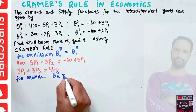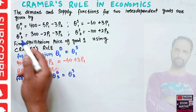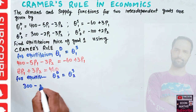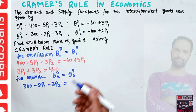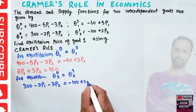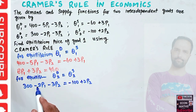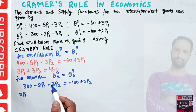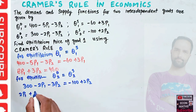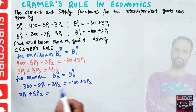For equilibrium in the second market, Q2d = Q2s: 300 − 2P1 − 3P2 = −100 + 2P2. Transposing terms: 2P1 moves to the left, and 3P2 + 2P2 = 5P2 moves to the left as well. So 300 + 100 = 400, giving the second equilibrium equation: 2P1 + 5P2 = 400.